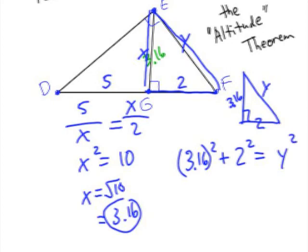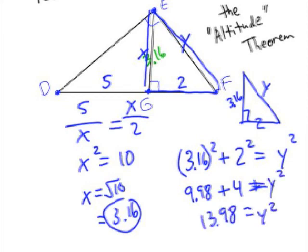3.16 squared is about 9.98. Notice that it's close to 10 because it was radical 10. Plus 4 equals Y squared. Add that up, we get 13.98 equals Y squared.